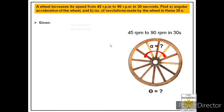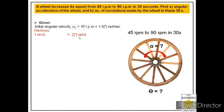We are given initial angular velocity omega naught equal to 45 revolutions per minute. Let us convert this into radian per second. We know one revolution per second is equal to 2π radian per second. So we divide by 60 to convert rpm to revolutions per second. Therefore, 45 divided by 60 revolutions per second equals 2π × 45/60, which is equal to 1.5π radian per second.